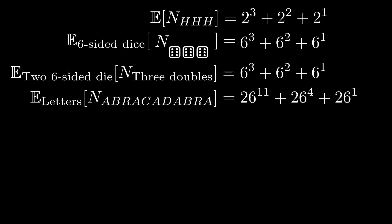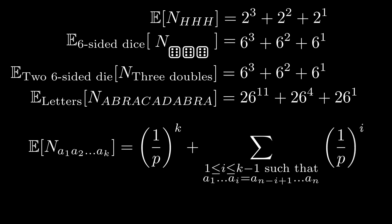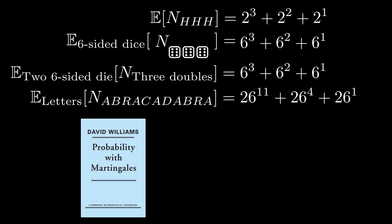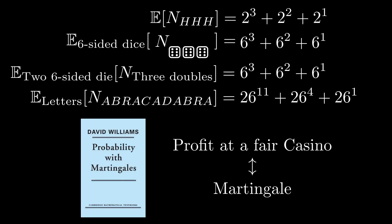This result is sometimes called the abracadabra theorem after that last example. In general, when observing a sequence of independent events where each outcome has probability p, the average number of events until the first occurrence of a string of length k is 1/p^k from the lucky gambler who wins all their bets, plus other powers of 1/p for each matching substring inside the original string — these come from gamblers who have some winnings when the casino closes. I first saw a proof of the abracadabra theorem in the book Probability with Martingales by David Williams. A martingale is the mathematical name for the profit when betting at a fair casino, and martingales are also commonly used in financial mathematics for modeling stocks and financial derivatives.